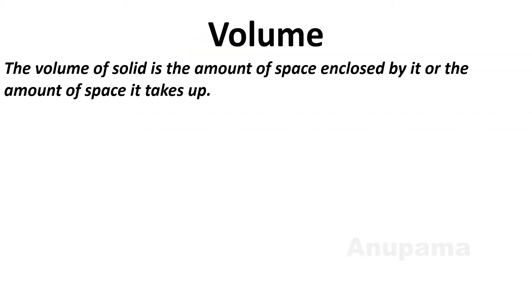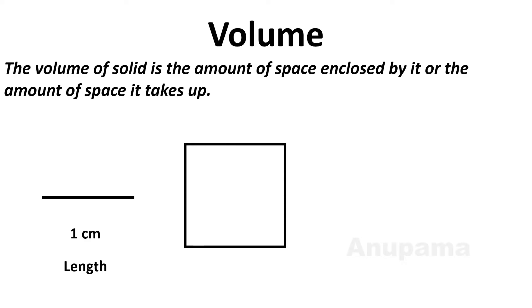The volume of a solid is the amount of space enclosed by it, or the amount of space it takes up. First, just consider a line segment. A line segment represents length and the unit is centimeter. A square is a 2D shape which has sides of one centimeter each, and the amount of space enclosed by this square is called area. The area of this square is one centimeter square — that is the unit of area.